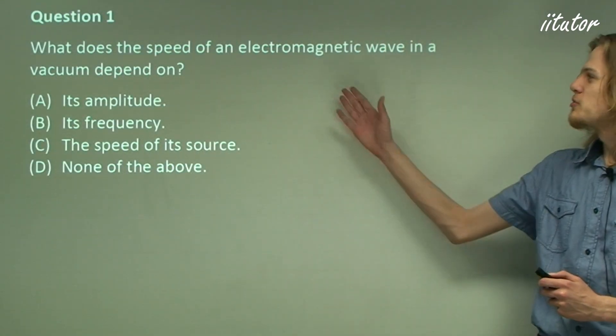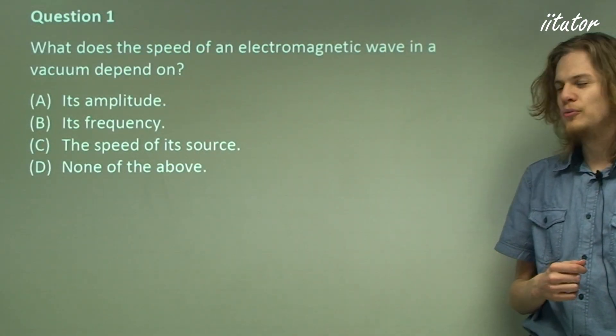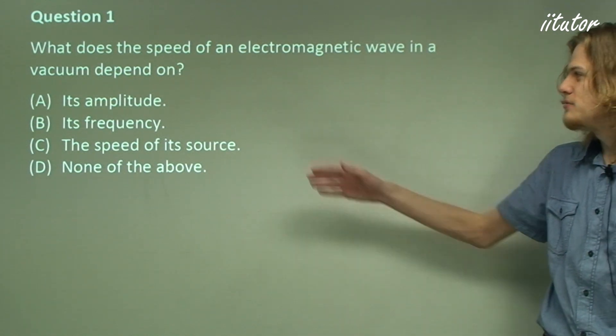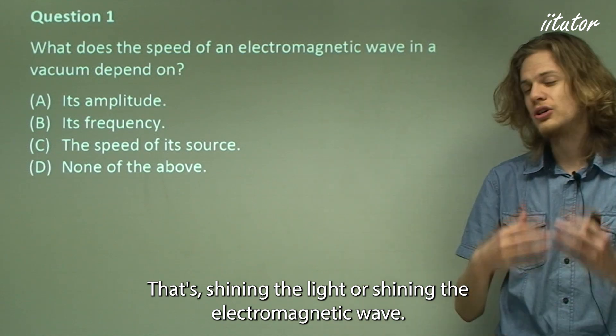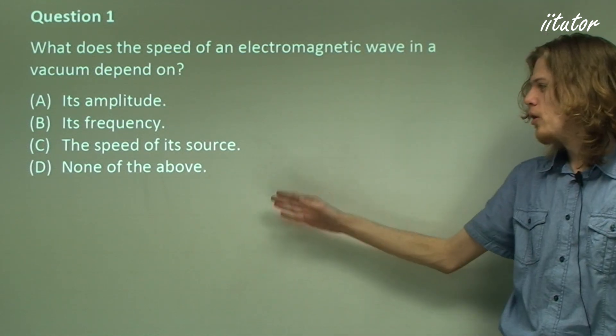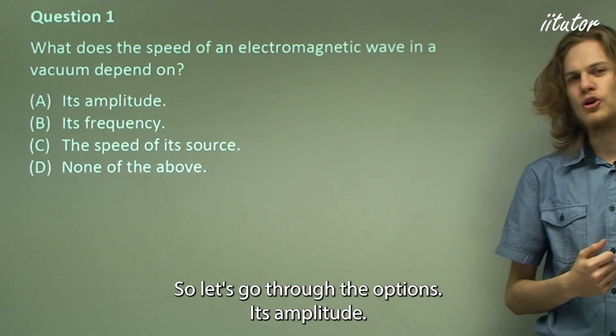Question one. What does the speed of an electromagnetic wave in a vacuum depend on? Does it depend on the wave's amplitude, its frequency, the speed of the source that's shining the electromagnetic wave, or none of the above? So let's go through the options.